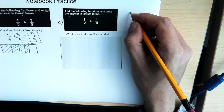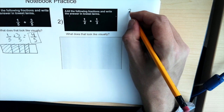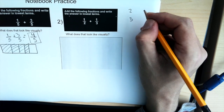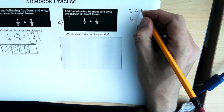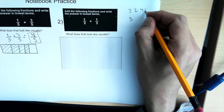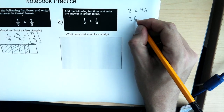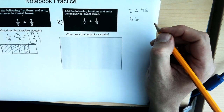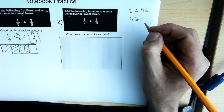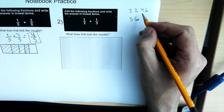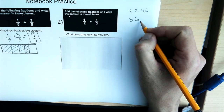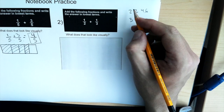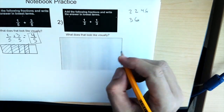For two and three: the multiples of two are two, four, six; and for three we have three and six. So the least common multiple is six.